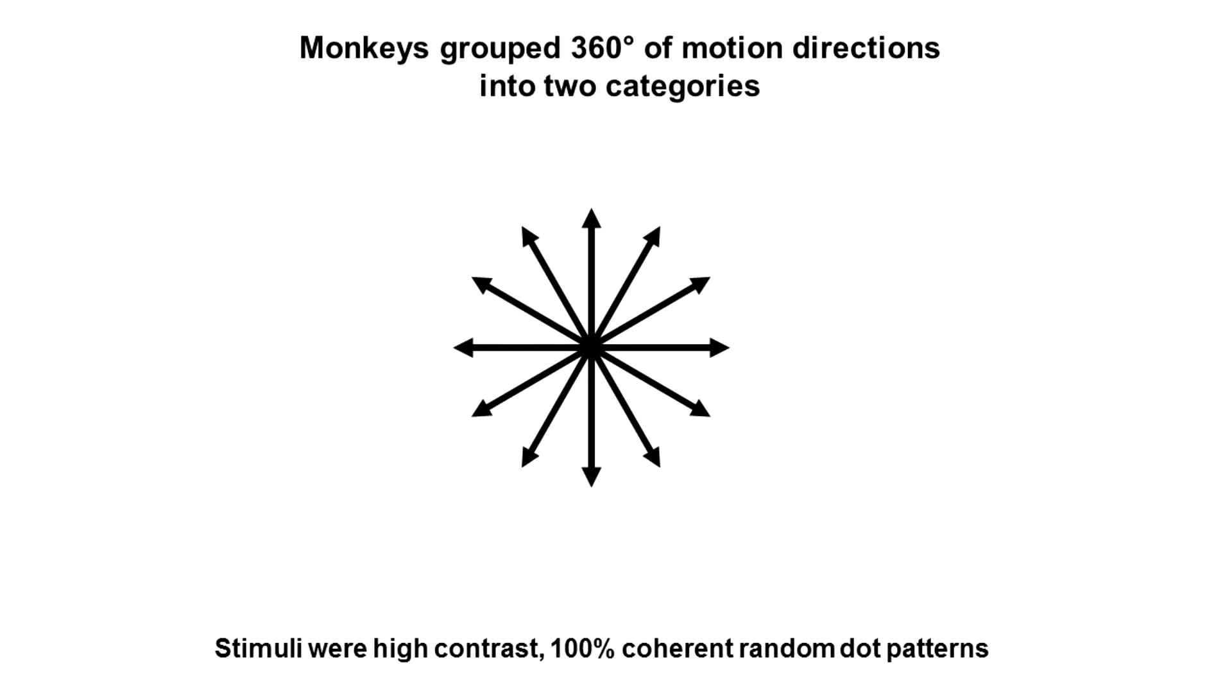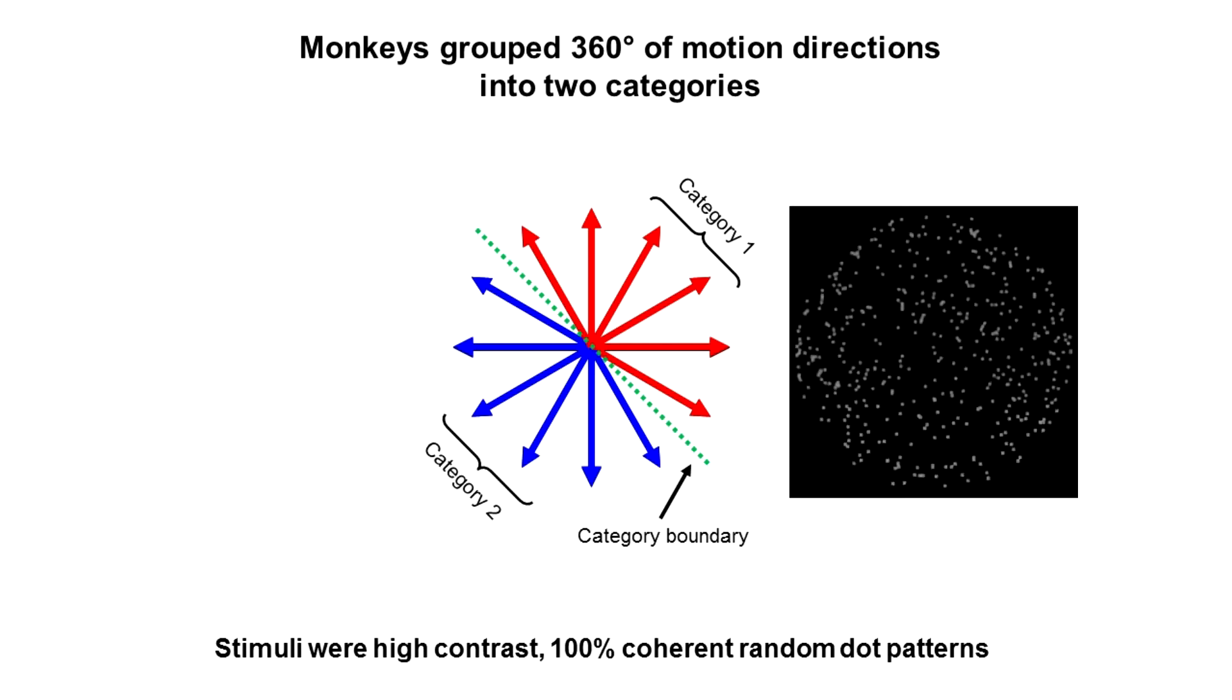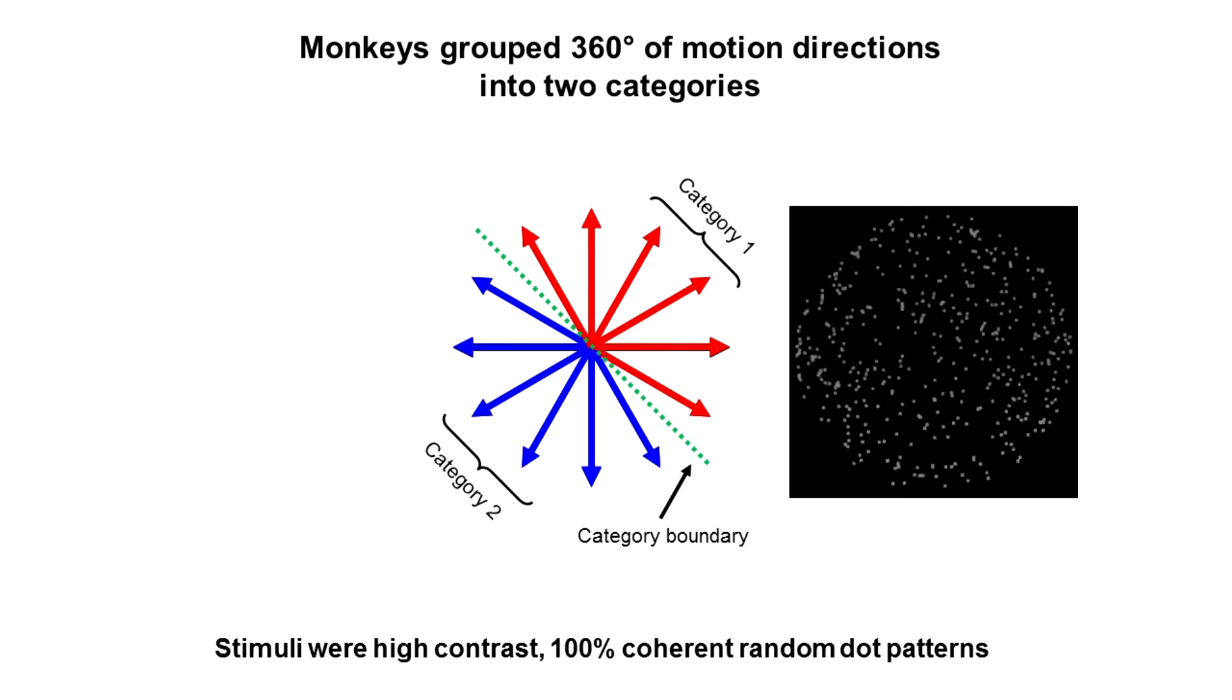For the categorization component of the task, we trained monkeys to group 360 degrees of motion direction into two categories separated by a learned category boundary. And here you see an example stimulus which belongs to category number one. The monkeys used these categories in a delayed match to category task as shown here.